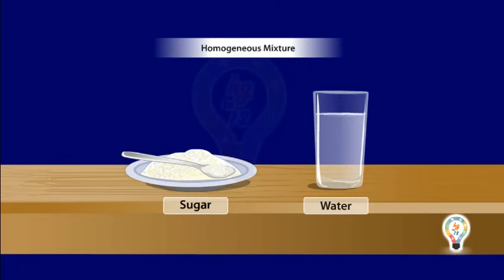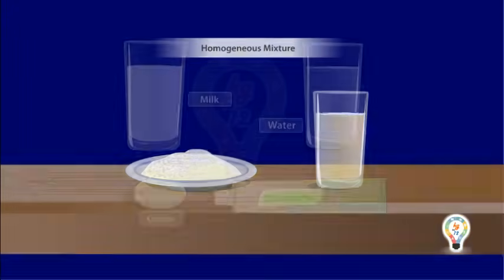Homogeneous mixture. A mixture whose components are soluble in each other. For example, when sugar is added to water, it dissolves showing no signs of two different mixtures.